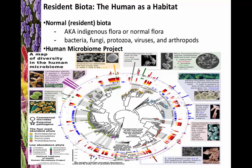Prevotella species are commonly present in the GI tract in about 19% of subjects and dominate intestinal flora when present. Lactobacillus is very common in the vagina. Staphylococcus is found at external body sites. E. coli is present in the gut of the majority of healthy subjects but at very low abundance, and is good at helping us extract vitamin K from certain foods.